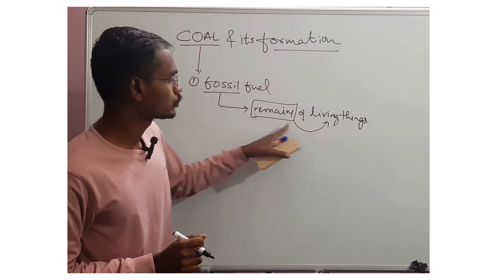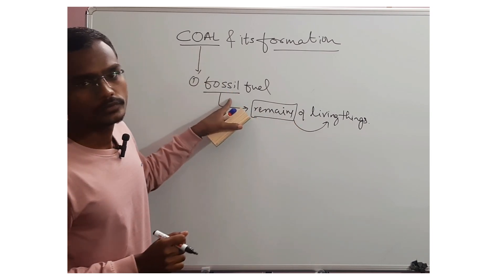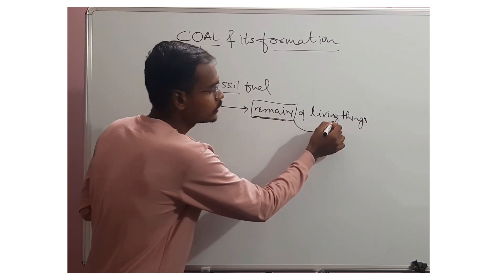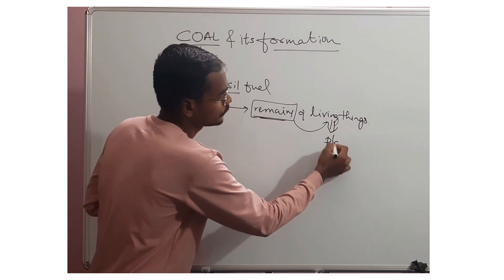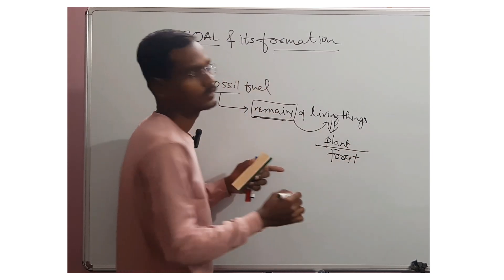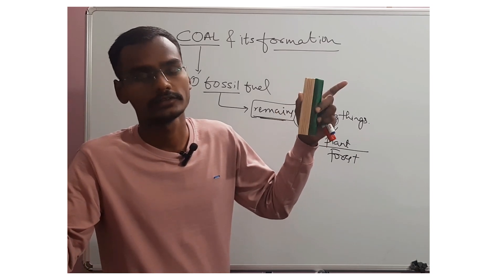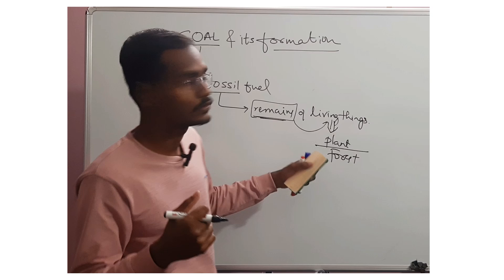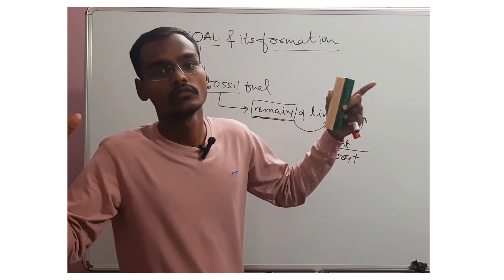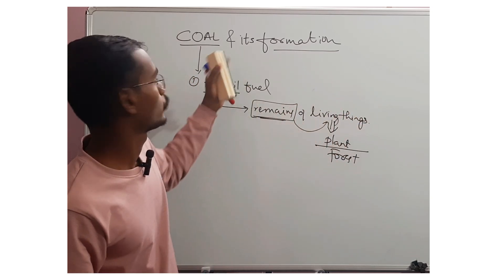So why do we call coal a fossil fuel? Because coal is the remains of living things — specifically, plants. Broadly, we can say forest, because not a single plant gives us that much coal. It is precisely a huge amount of forest wealth that was becoming coal.